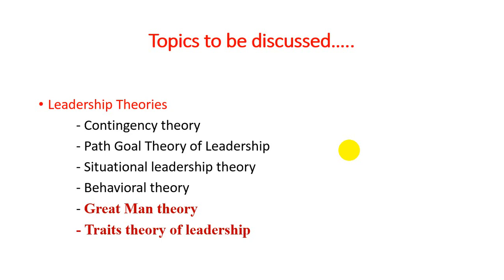The telling style of leadership matches the M1 level of maturity. In telling, leaders are directing employees and followers, and decisions are made by leaders. At M1, employees show low confidence, low commitment, and low competency. When competency, commitment, and confidence are all low, leaders should make all the decisions, direct employees, and tell them what to do.